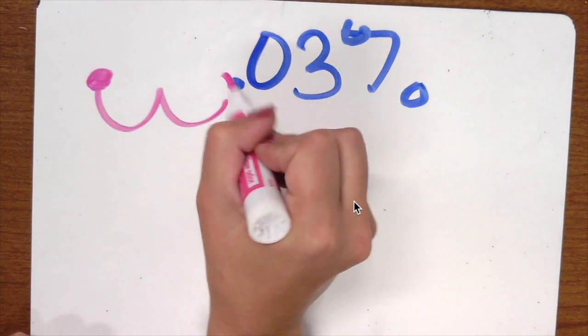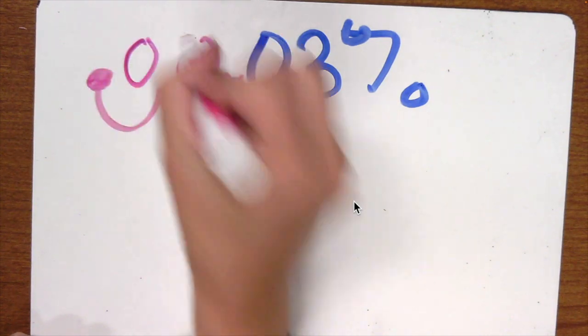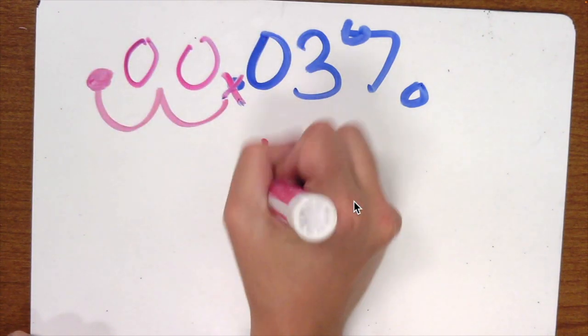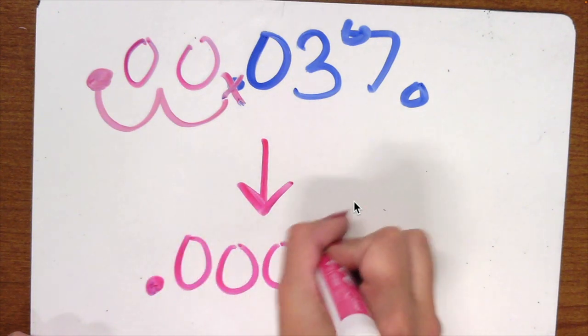My new decimal will be there. Now I have no spaces there so I need to add zeros. I did two jumps so I need to add two zeros. So my decimal will be 0.0003.